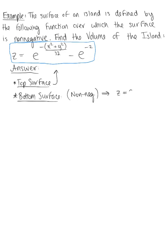We know that the xy-plane is defined as z equals 0. So we can define our integrand for the volume integral. For a double integral, the integrand would be the top surface minus the bottom surface.